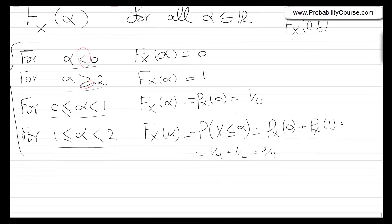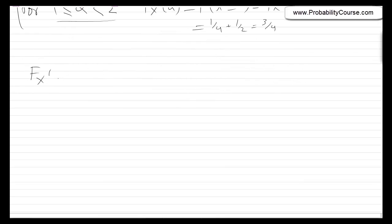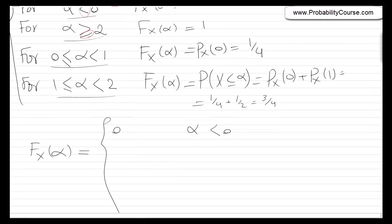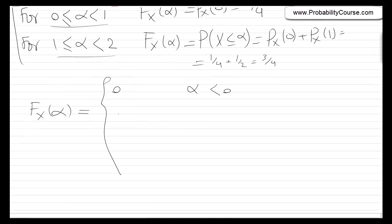Let me summarize: Fx of alpha equals zero for alpha less than zero; one-fourth for zero less than or equal to alpha less than one; three-fourths for one less than or equal to alpha less than two; and one for alpha greater than or equal to two. This covers all real values of alpha.